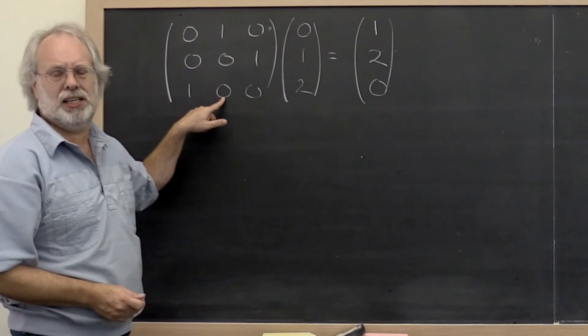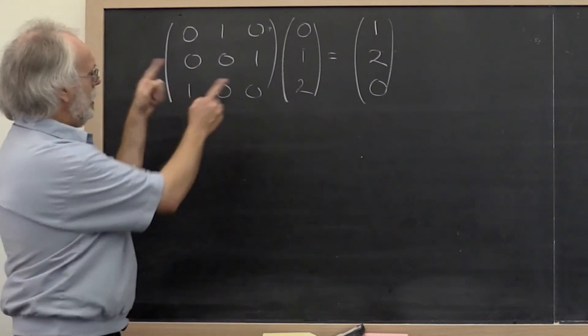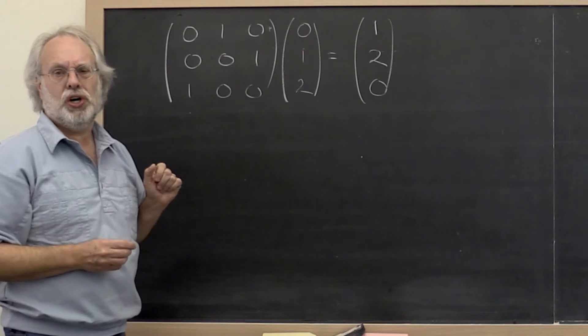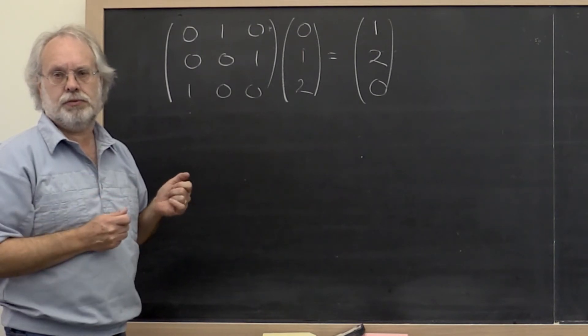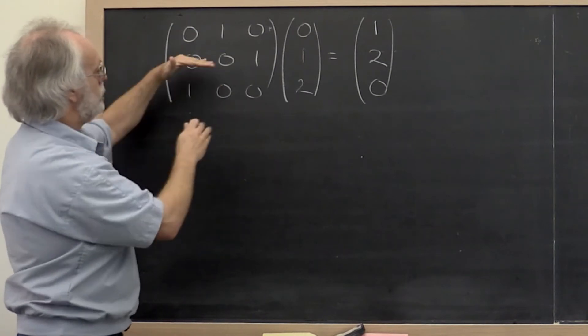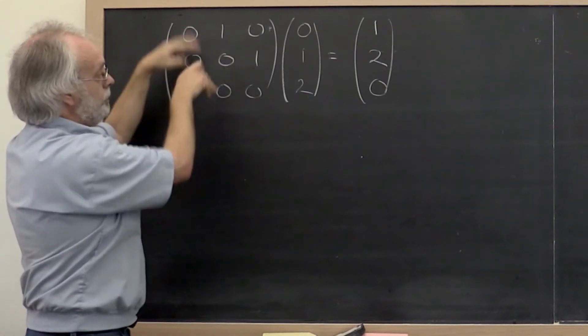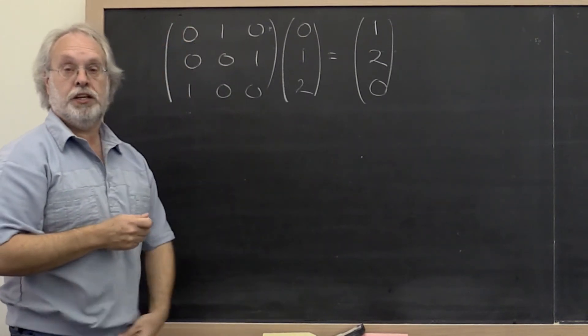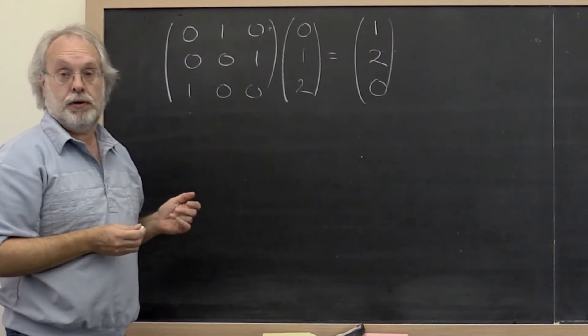What does this look like? This really looks like a shuffling of the identity matrix, right? We've taken either the columns or rows, but let's focus on the rows. We have moved the rows of the identity matrix around.